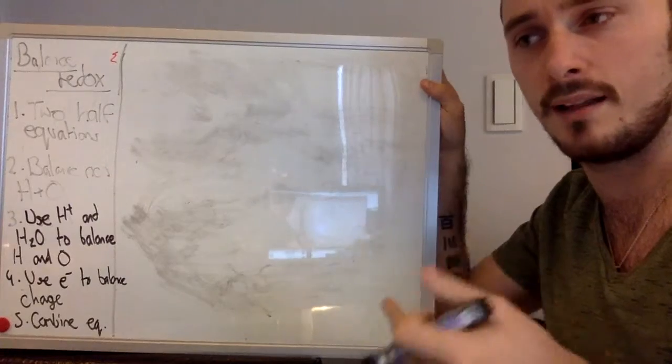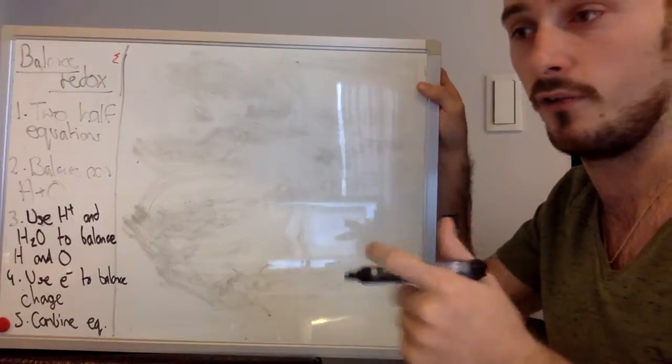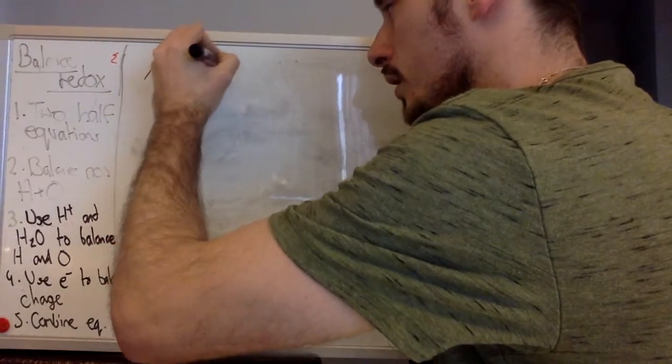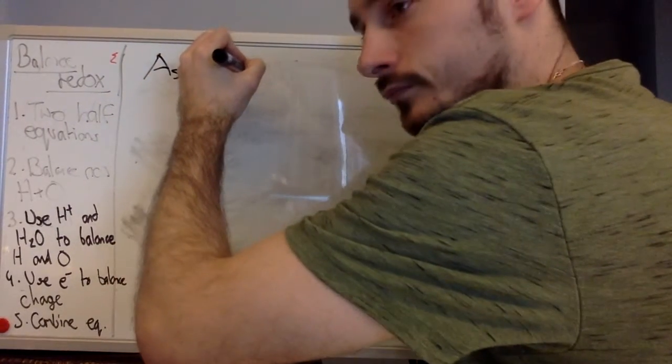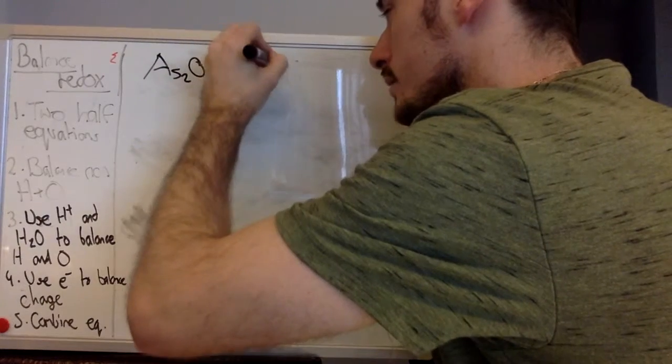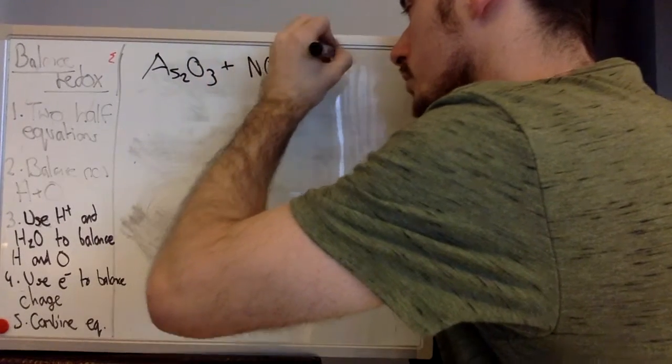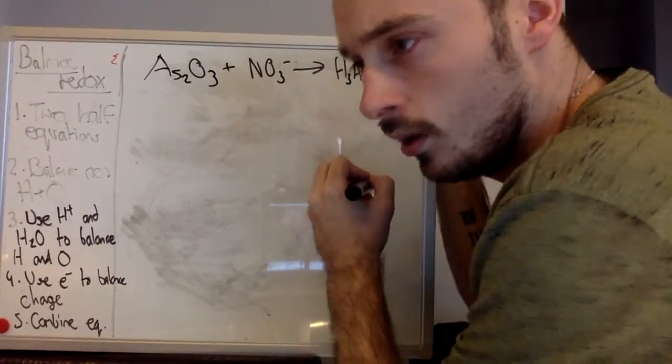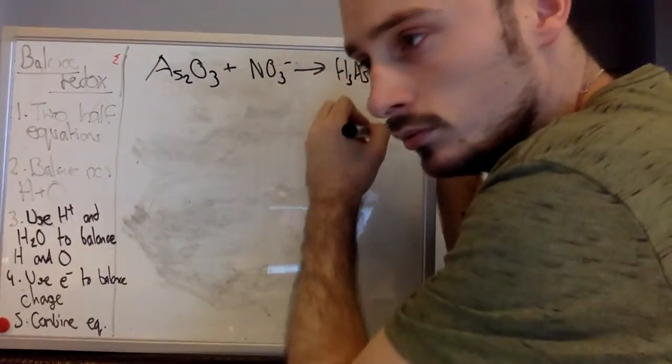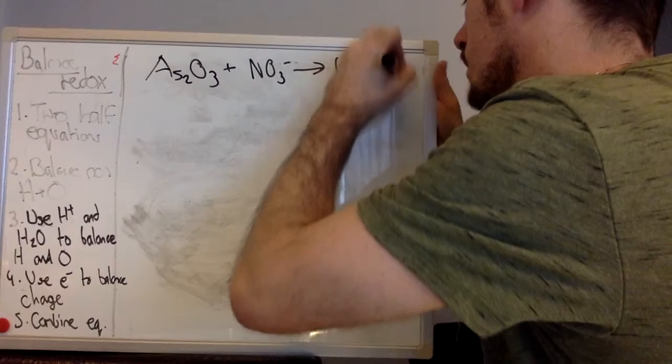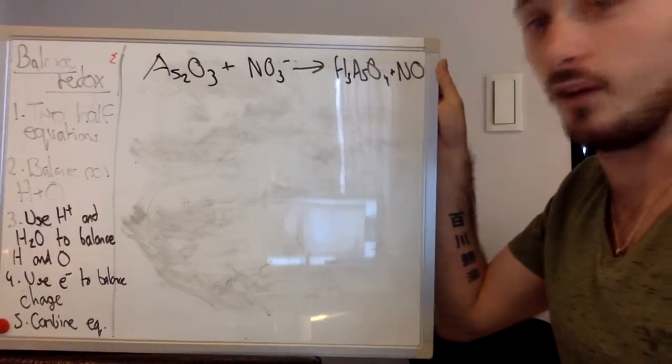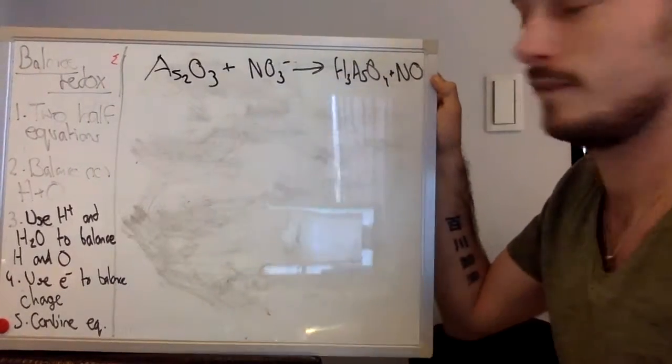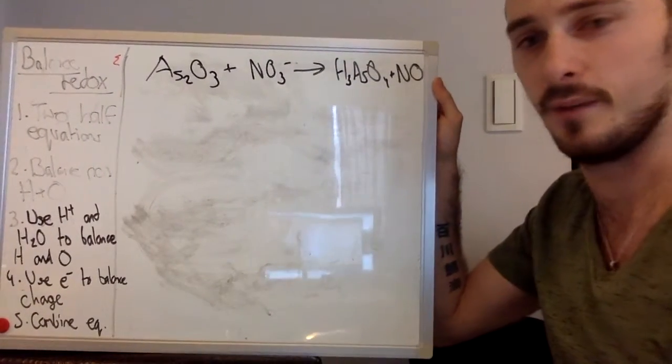So let's have a look at balancing a redox reaction. So first off, let's have a look at this example. As2O3 plus NO3 minus goes to H3AsO4 plus nitrogen monoxide gas. So there are quite a few interesting things going on in this equation, I think you can tell right away. What is unbalanced about both sides?